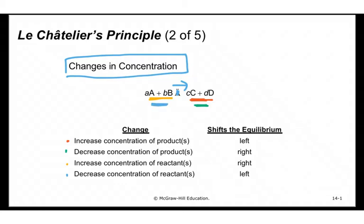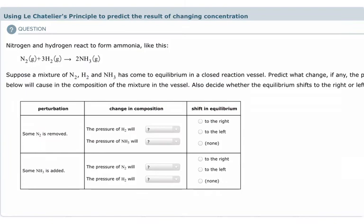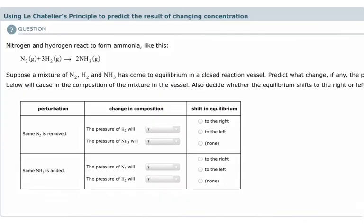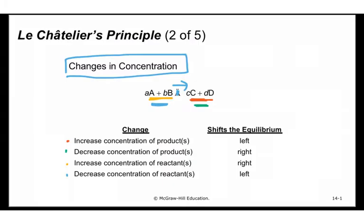Let's take this concept and apply it to two examples from Alex. Here we have the formation of ammonia from molecular nitrogen and hydrogen gas. If some N2 is removed — molecular nitrogen is a reactant — then we're in the scenario of decreasing the concentration of reactants, so equilibrium will shift to the left.